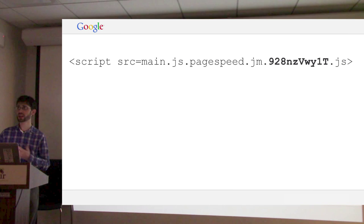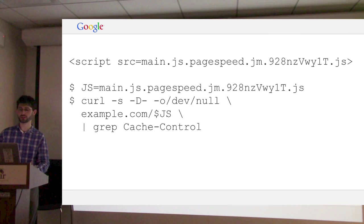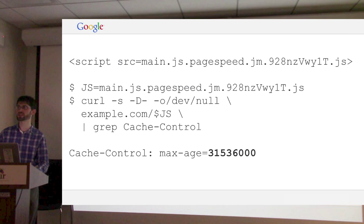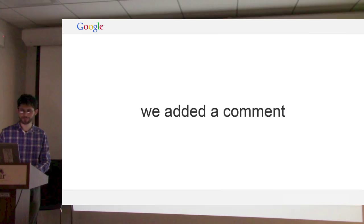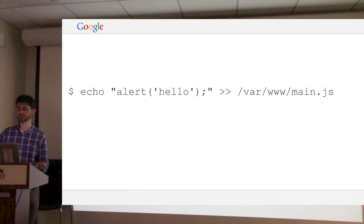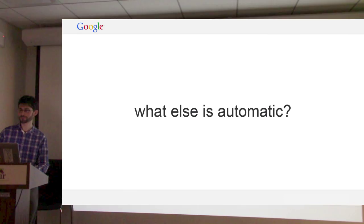We fetch it and look for the cache control header, and see it has a nice long cache lifetime — that's a year in seconds, which in terms of browser caches is basically forever. So the content changes, the hash changes. We tried this — sent something to the file and fetched it, but the hash didn't change. It turns out we added a comment to the file, and PageSpeed strips out comments, and the hash is of the optimized version. So we put some real JavaScript in the file, and we do see a different hash.